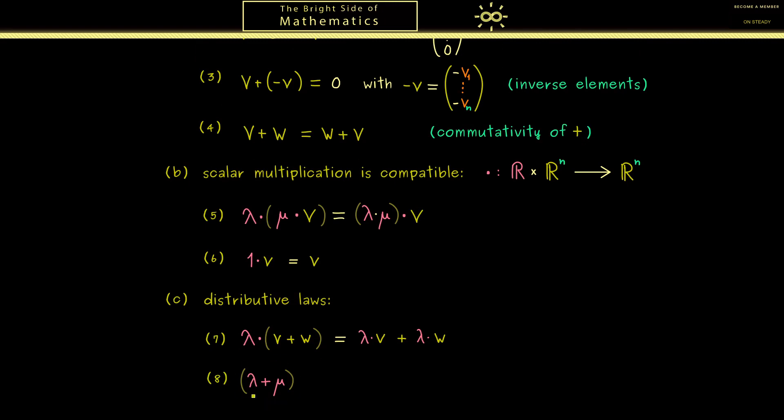And the same holds when we do it with the scalar factors. So when we first add our scalars lambda and mu in R, and use the resulting scalar for scaling a vector v, then this is the same as adding two scaled vectors v. More concretely, it's equal to lambda times v plus mu times v. So you see, this is how distributivity works.